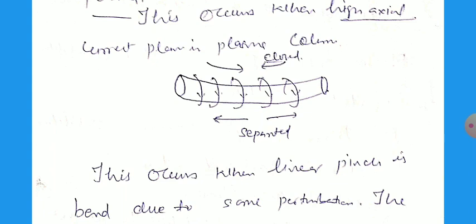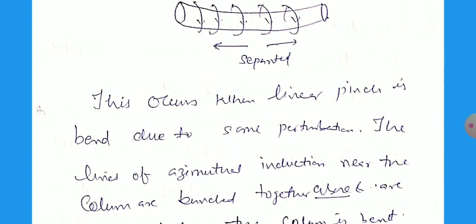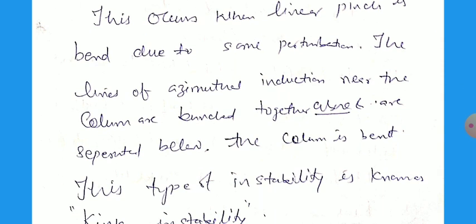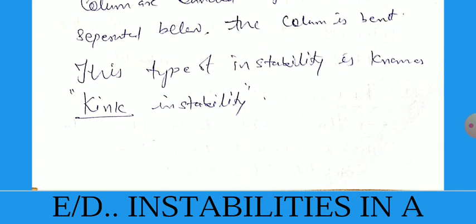This occurs when the linear pinch is bent due to some perturbation. Thus the lines of azimuthal induction near the column are bunched together above and separated below. The column is bent and this type of instability is also known as kink instabilities.